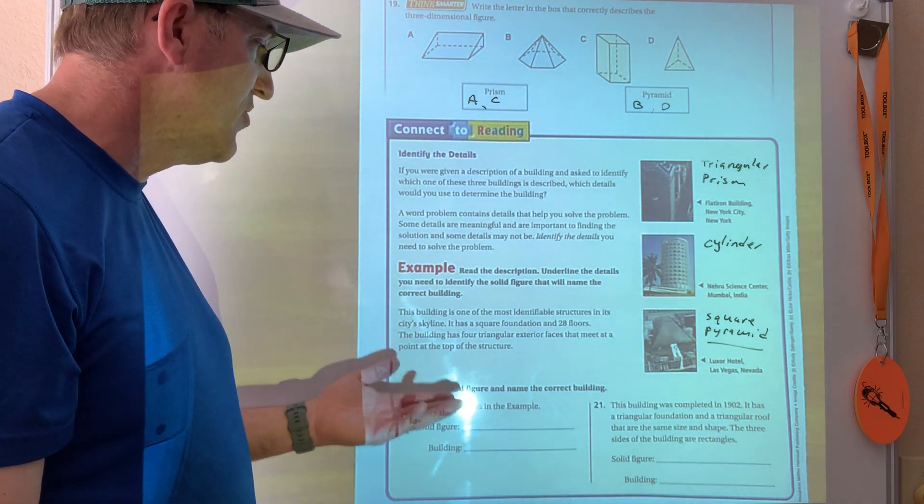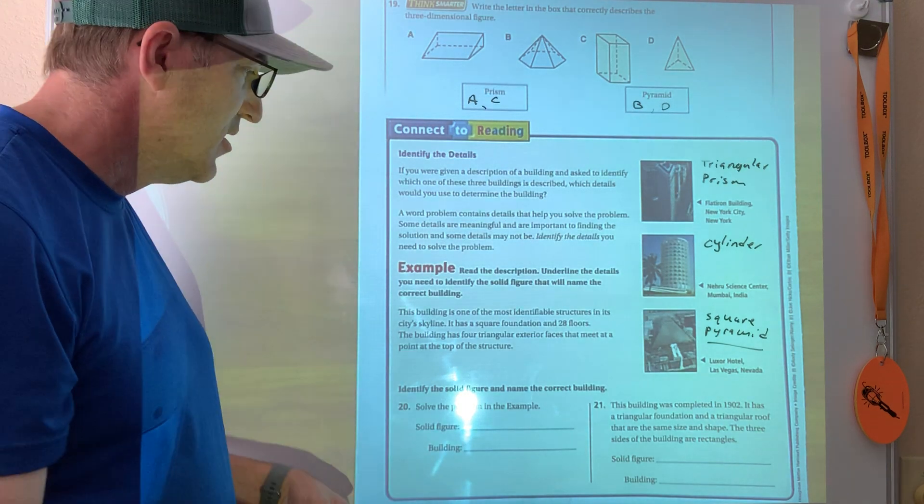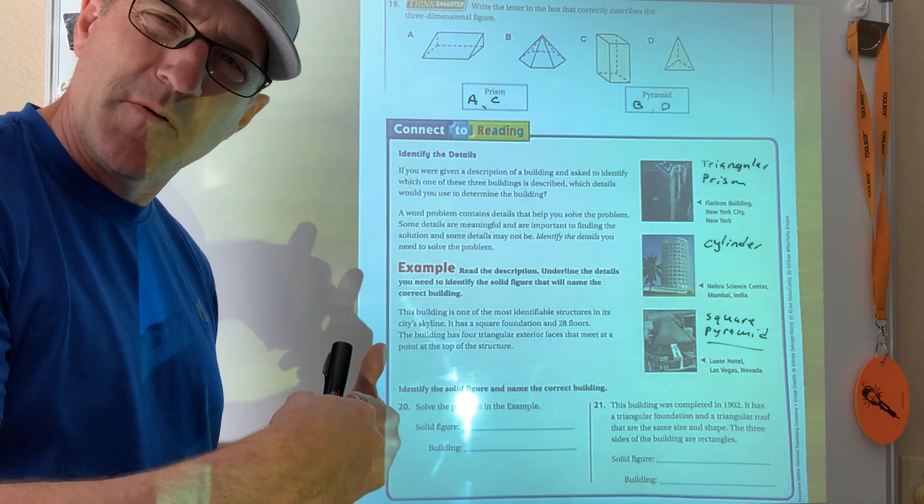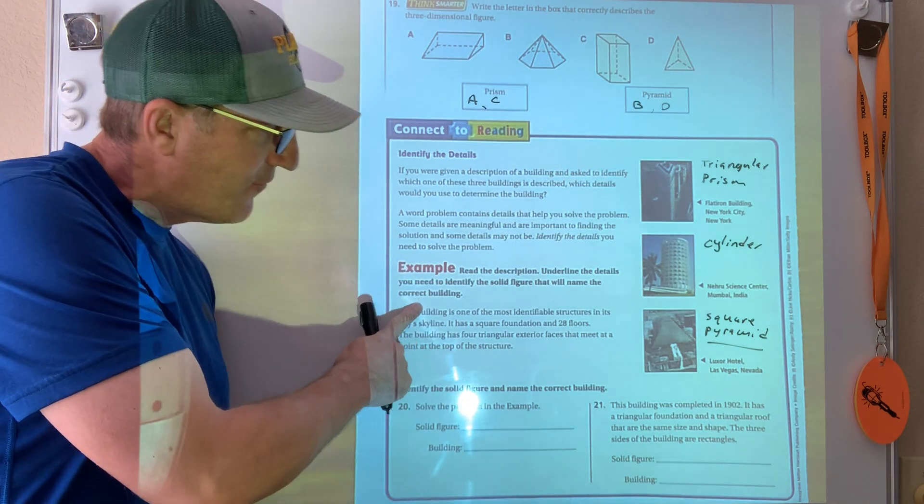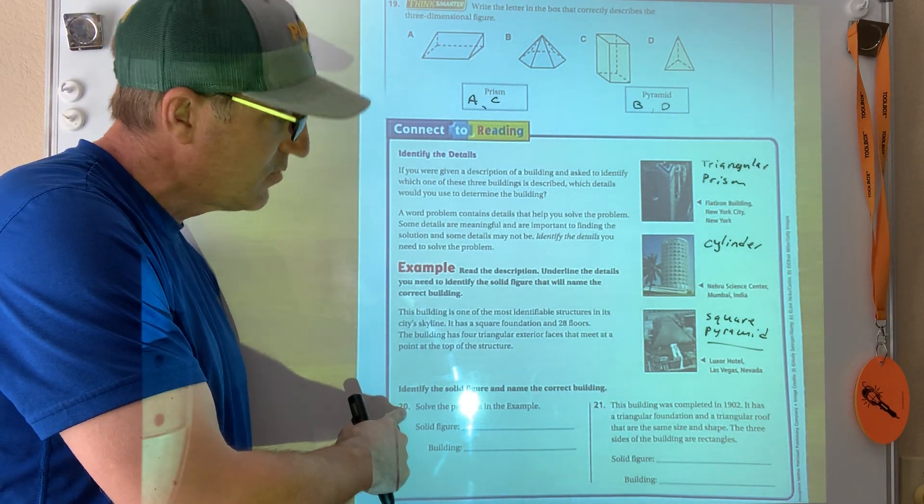So identify the details that you need to solve the problem. So we're just going to underline details that we think would help us. Okay, so I'm going to read it, then I'm going to have you underline it, then I'm going to underline it, and let's see if it matches. So read the description, underline the details you need to identify the solid figure that will name the correct building. So this one goes with this one, and then there's 21 of it.